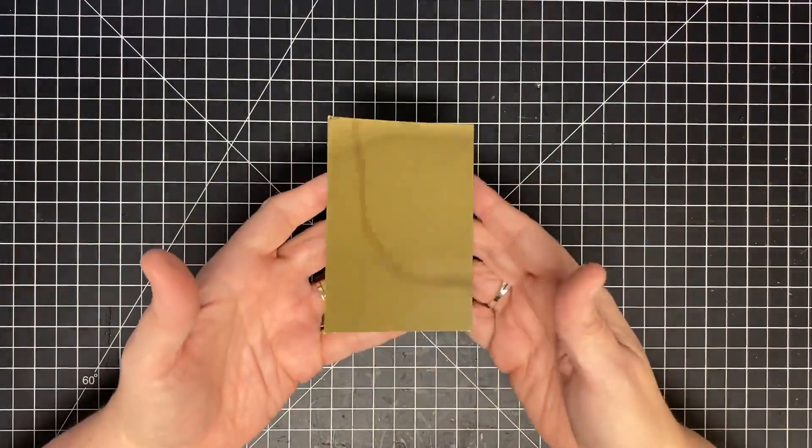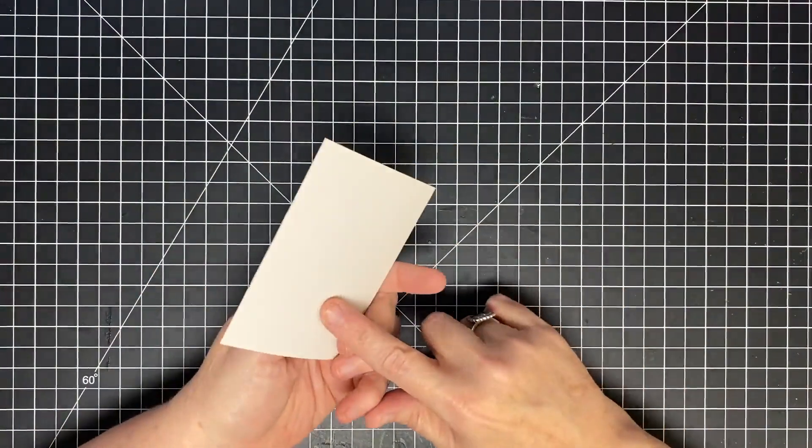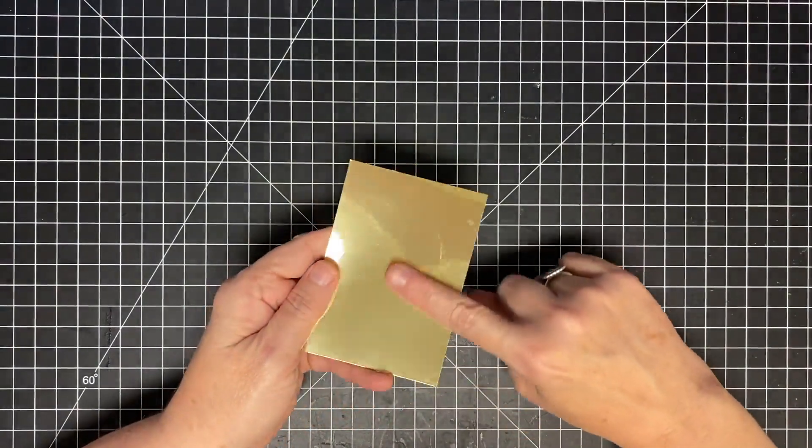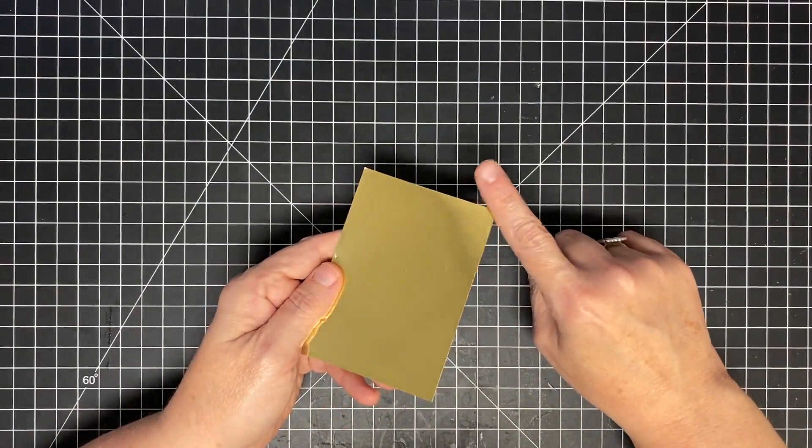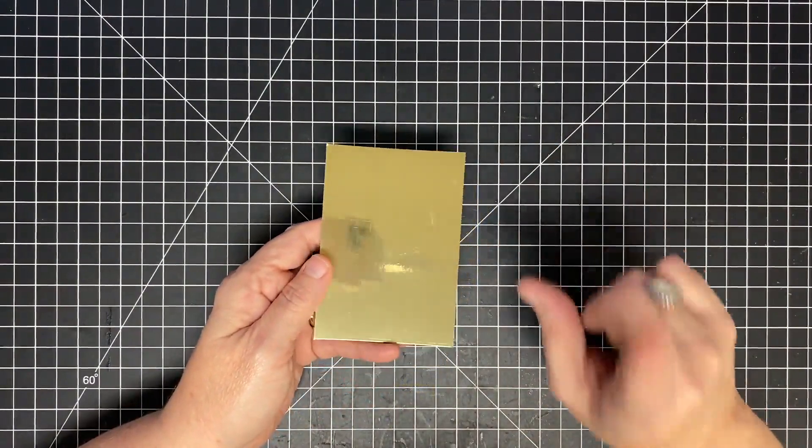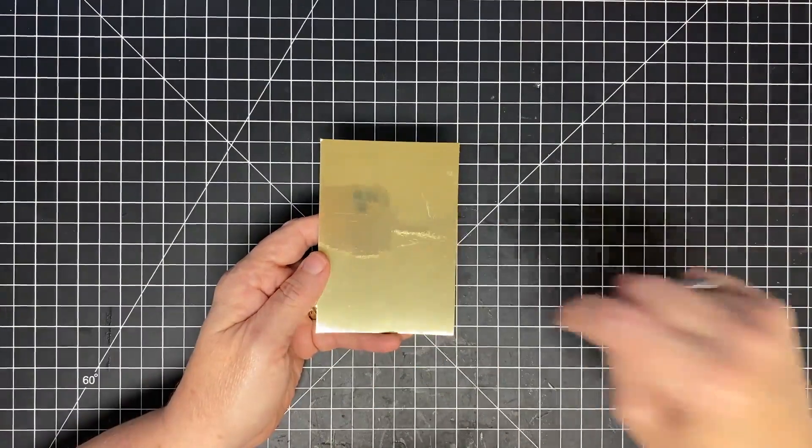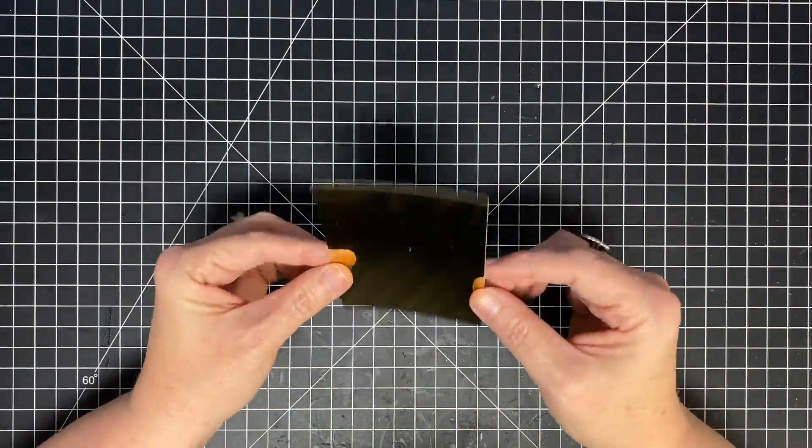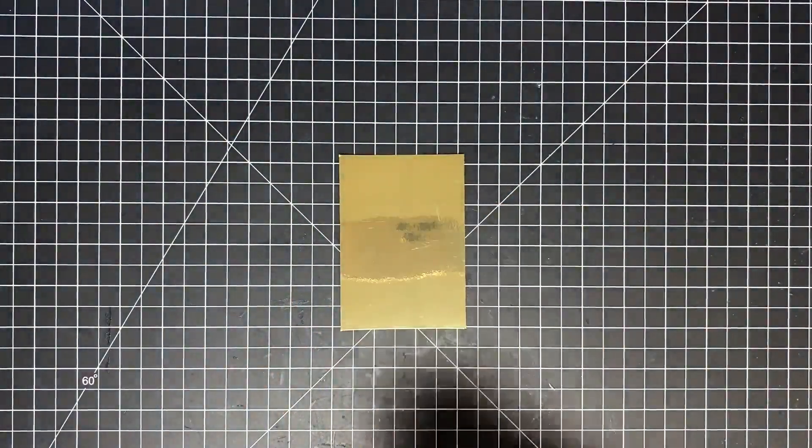So, the first thing we need to do is cut ourselves a piece of foil cardstock. Now, I have not tried it, but I'm pretty convinced you could cover regular cardstock in aluminum foil on the shiny side and probably get the same technique. I haven't tried it, but if you want me to try it, leave it in the description and I will. This is just a piece of actual foil cardstock I had in my stash I didn't even know I had, so we're going to use that.